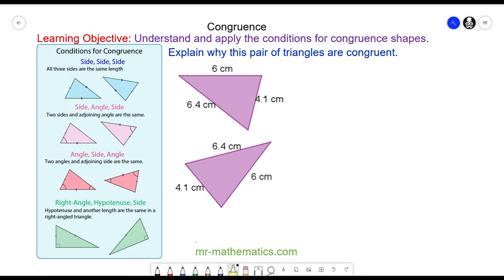So the four conditions for congruence with triangles are side, side, and side, which means the two shapes have three equal sides even though it's a different rotation or reflection.